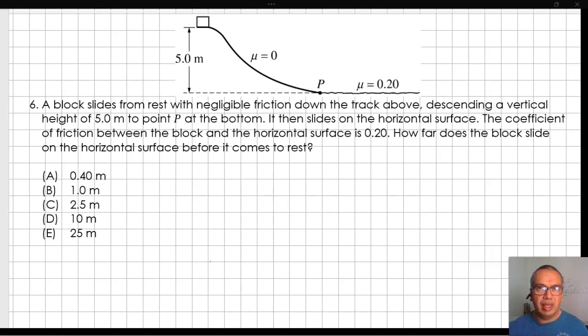It slides from rest with negligible friction down the track above, descending a vertical height of 5 meters. It then slides on the horizontal surface. The coefficient of friction between the block and the horizontal surface is 0.20. How far does the block slide on the horizontal surface before it comes to rest?